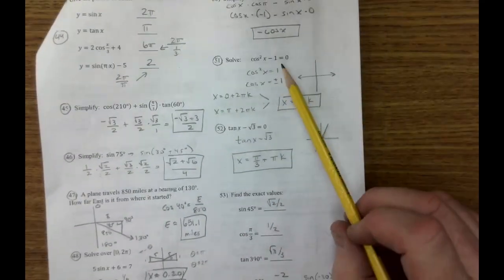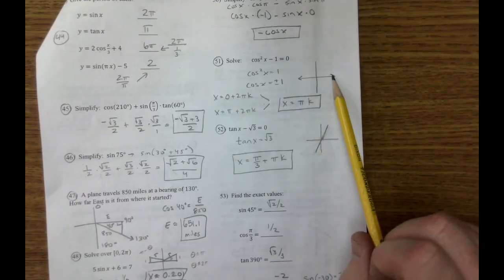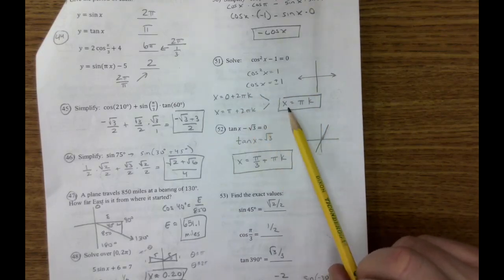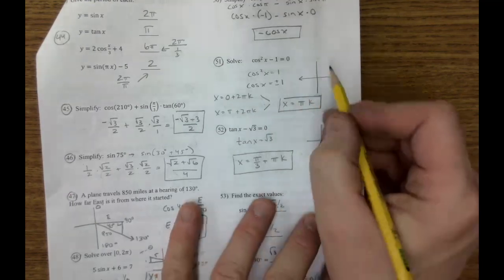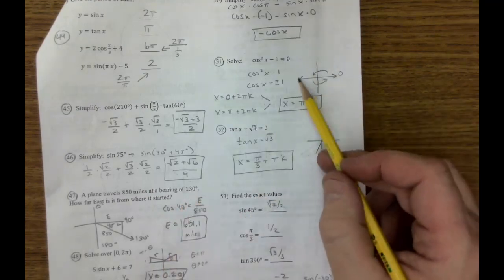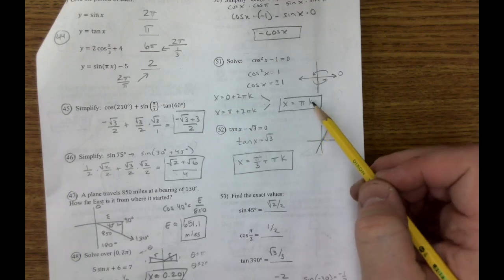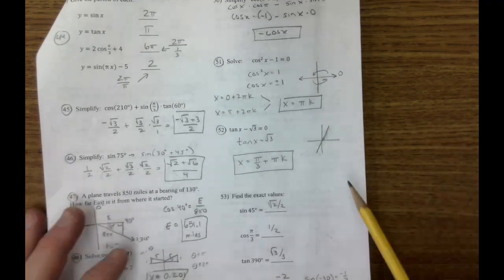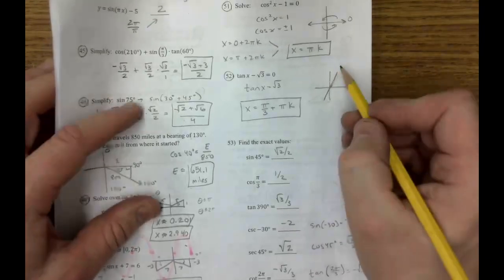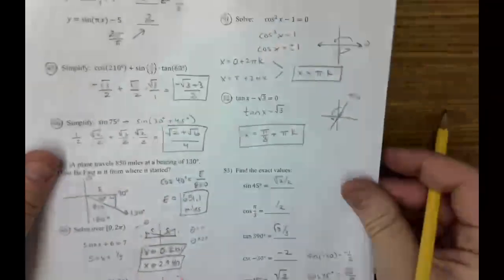51, I solved it as plus or minus 1. Cosine is plus or minus 1 here and here, which leads me to these two formulas, which can be simplified just into this. Because this angle is just 0 plus pi plus pi, and you could repeat it with this. And 0 plus anything is just itself. 52, these are two angles on the unit circle. This one and this one. Pi over 3. And the next one, tangent, is always exactly pi across.